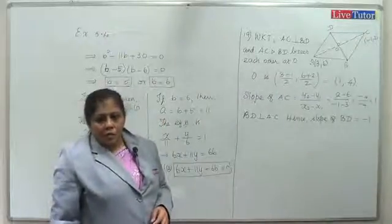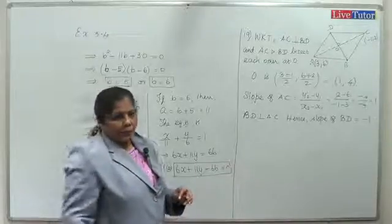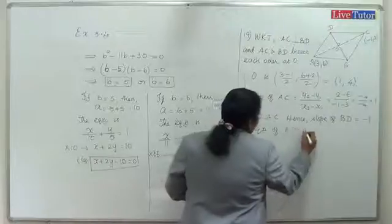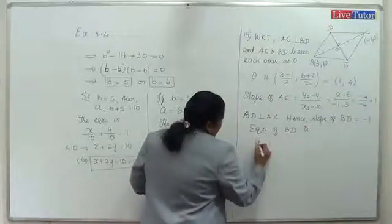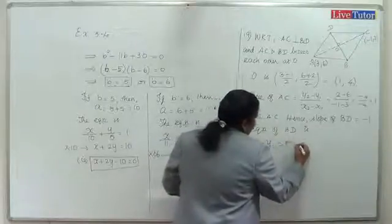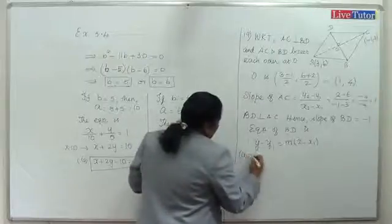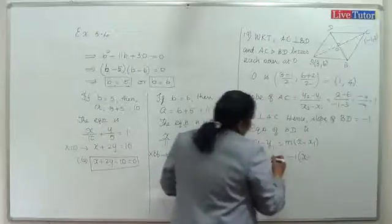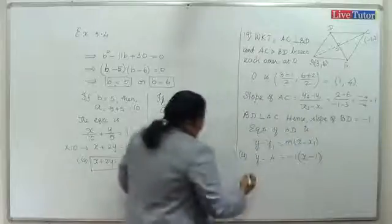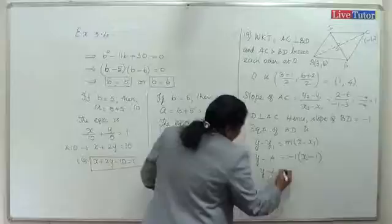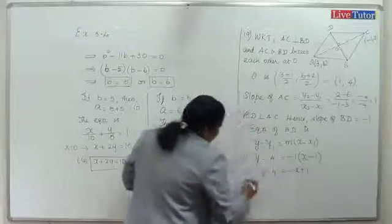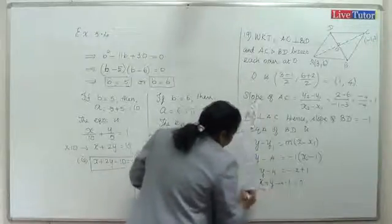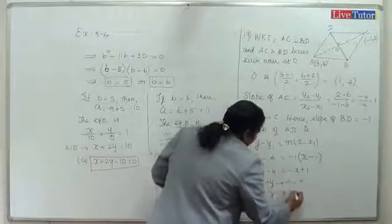Since m1 × m2 equals -1, slope of BD is -1. Using slope-point form with point O(1, 4) and slope -1: y minus 4 equals -1 times (x minus 1). This implies y minus 4 equals minus x plus 1, giving x plus y minus 5 equal to 0.